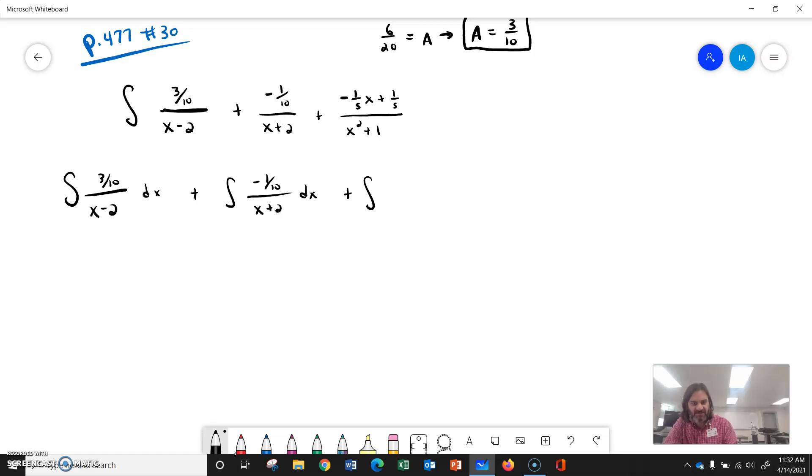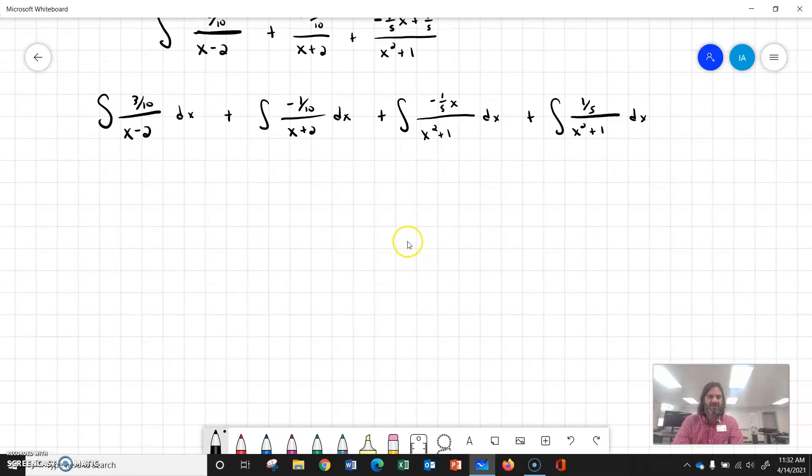so it would be plus integral of negative 1 fifths over x squared plus 1 dx. And the last fraction will be plus 1 fifths over x squared plus 1 dx. So that's going to be four things to integrate.